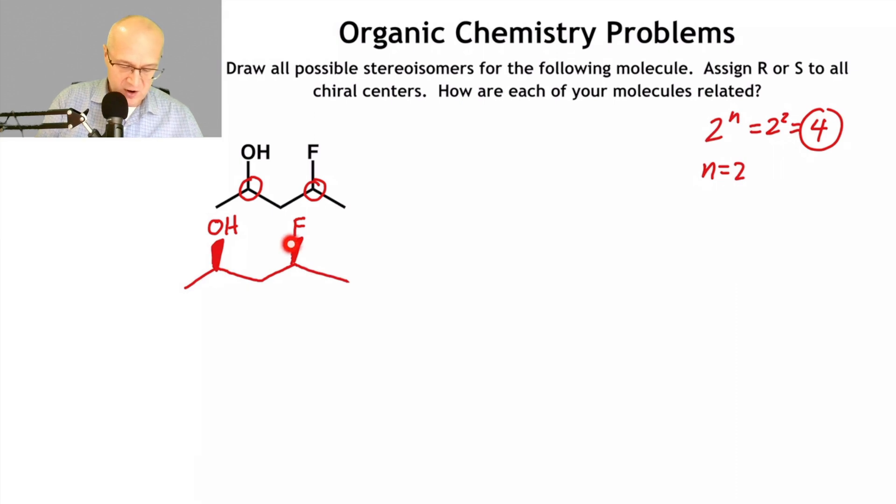Let's assign R and S real quick while we're here. One, four. Hydrogen is four. Two, three. So this is R. One, four, two, three. So this is S.